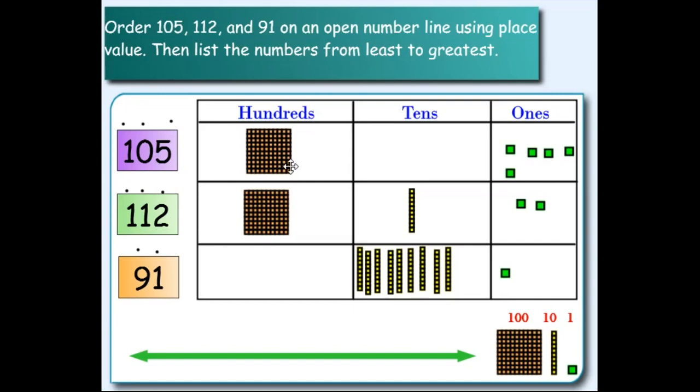For 105, we see one hundred. For 112, we see one hundred. For 91, we see zero hundreds. That means 91 is the least amount, so we can bring 91 to the first place on the number line.